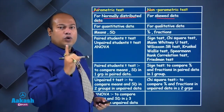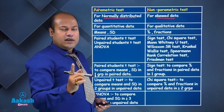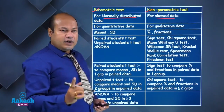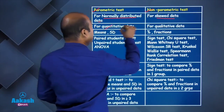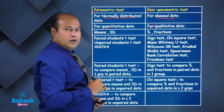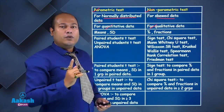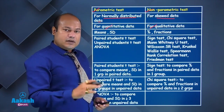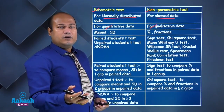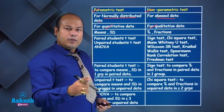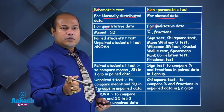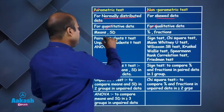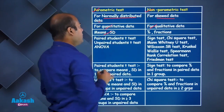Parametric tests are done for quantitative data, whereas non-parametric tests are done for qualitative data. Whenever you are doing any parametric test, you will always compare in terms of means and standard deviation. Whenever you are doing any non-parametric test, you will compare in terms of percentage, fraction, or proportion.